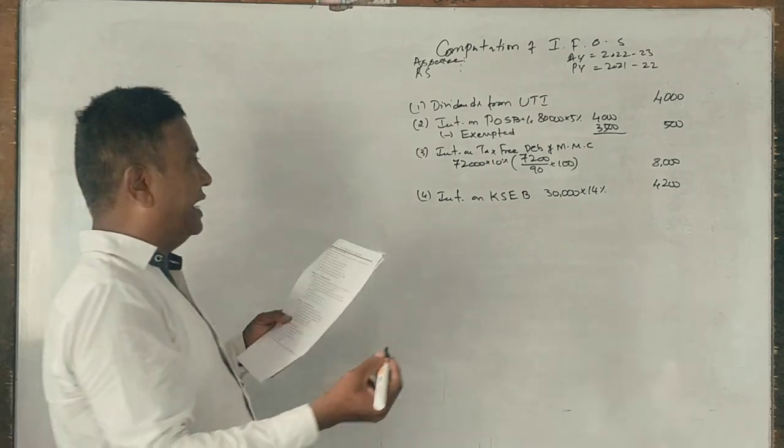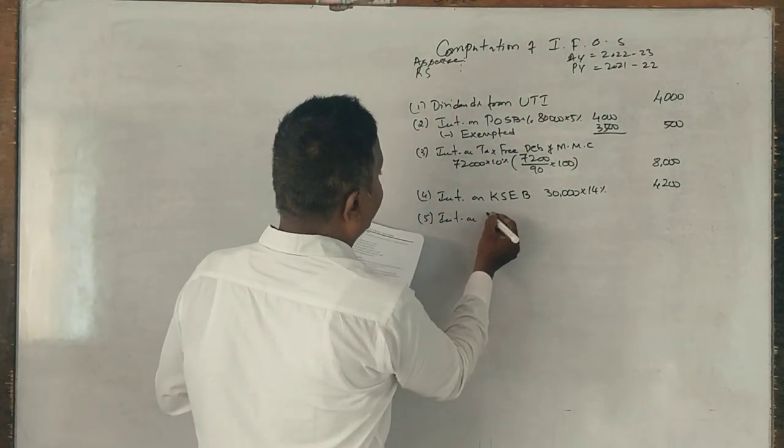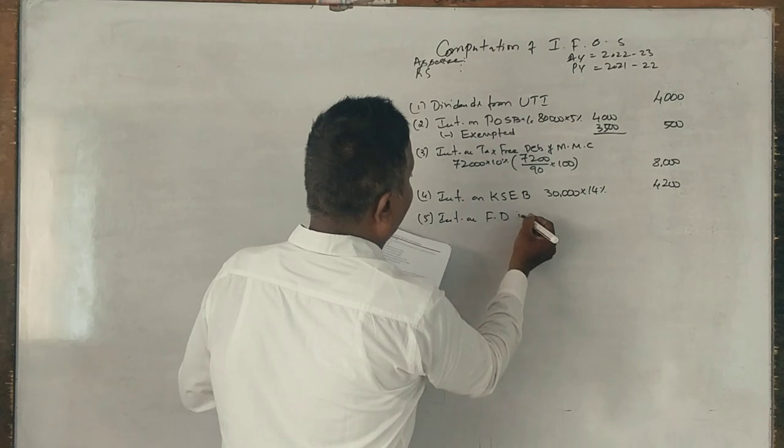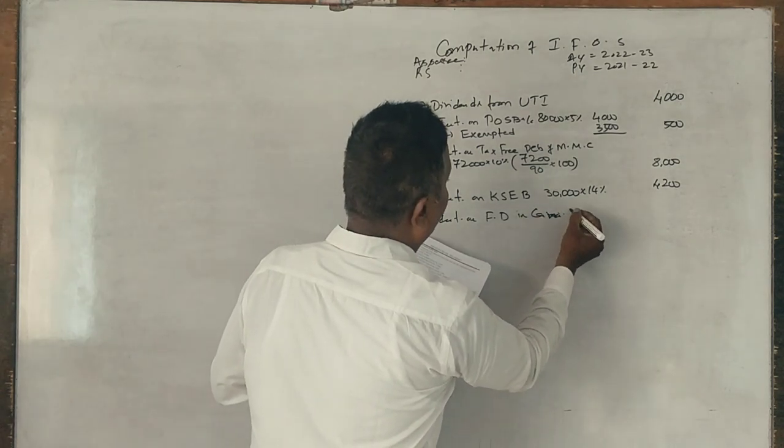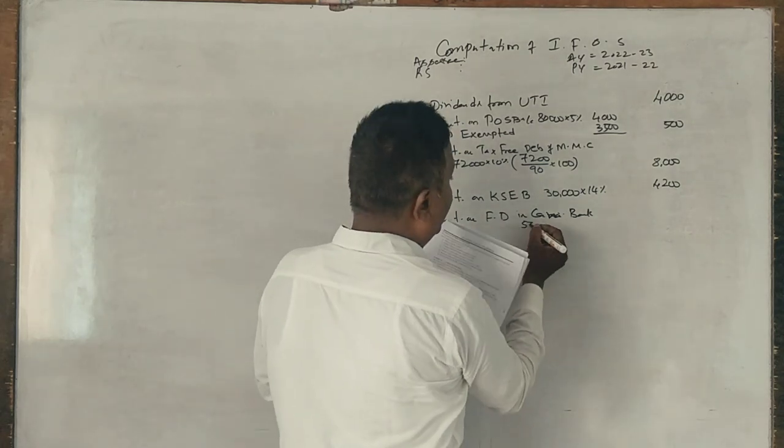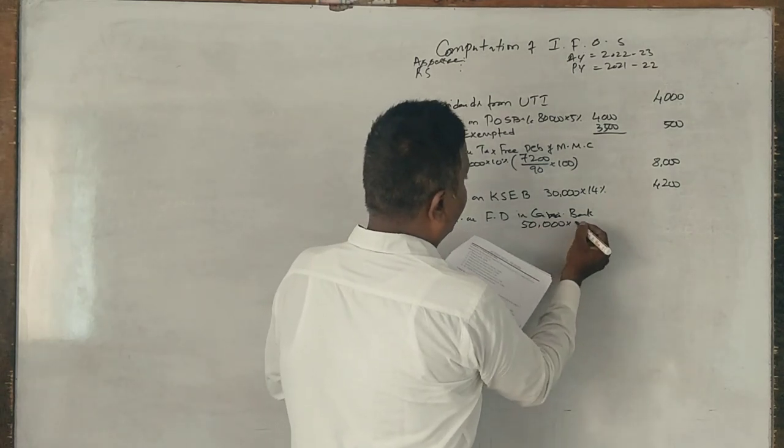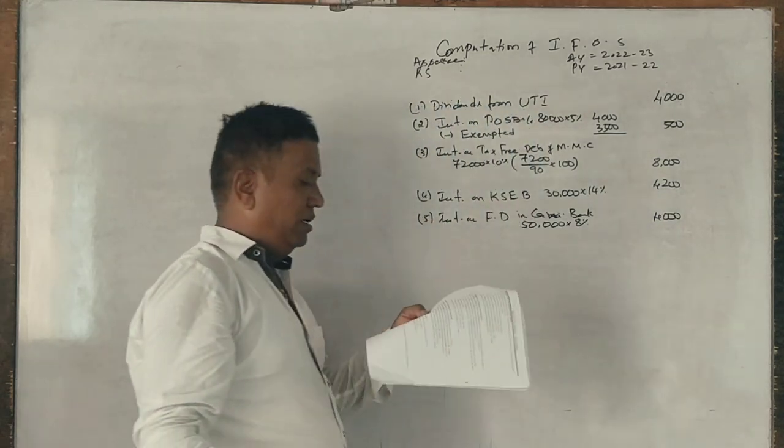50,000 fixed deposit with Karnataka Bank Mysore at 8 percent per annum. Interest on fixed deposit in Karnataka Bank, 50,000 into 8 percent, 4,000 is taxable.